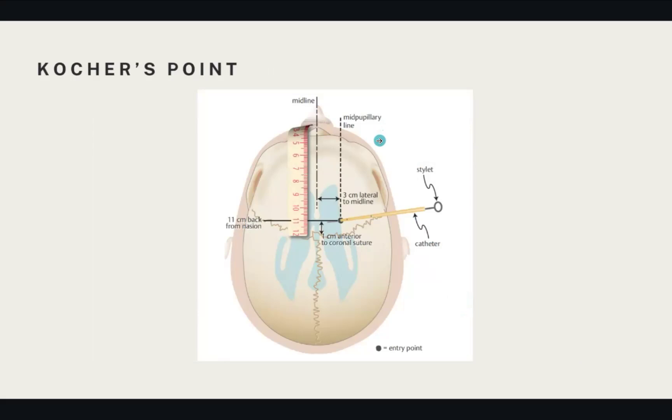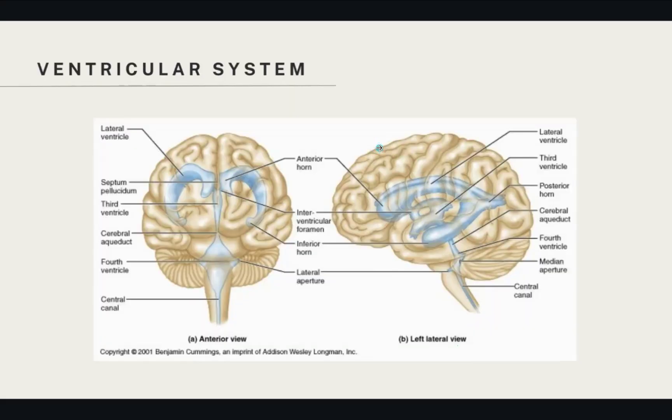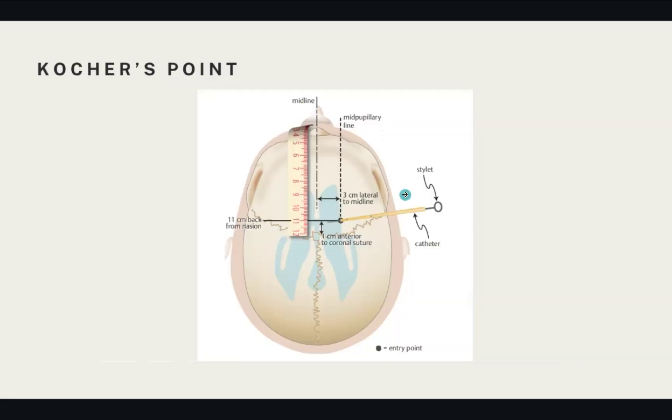In terms of inserting it, we're trying to aim for the frontal horns of the lateral ventricles. We want to mark the midline, find Kocher's point, which is 11 centimeters from the nasion, 3 centimeters to the side, usually on the right-hand side because that's our non-dominant hemisphere. That's the insertion of the EVD. I've made a video to help demonstrate the process for better visual representation.